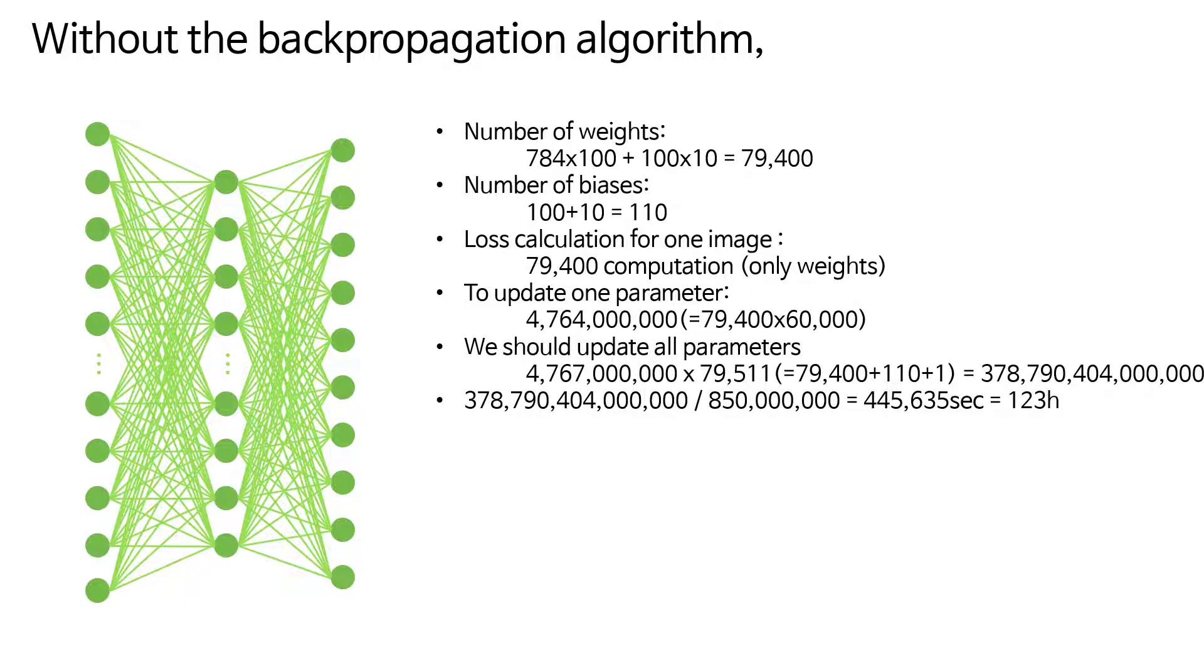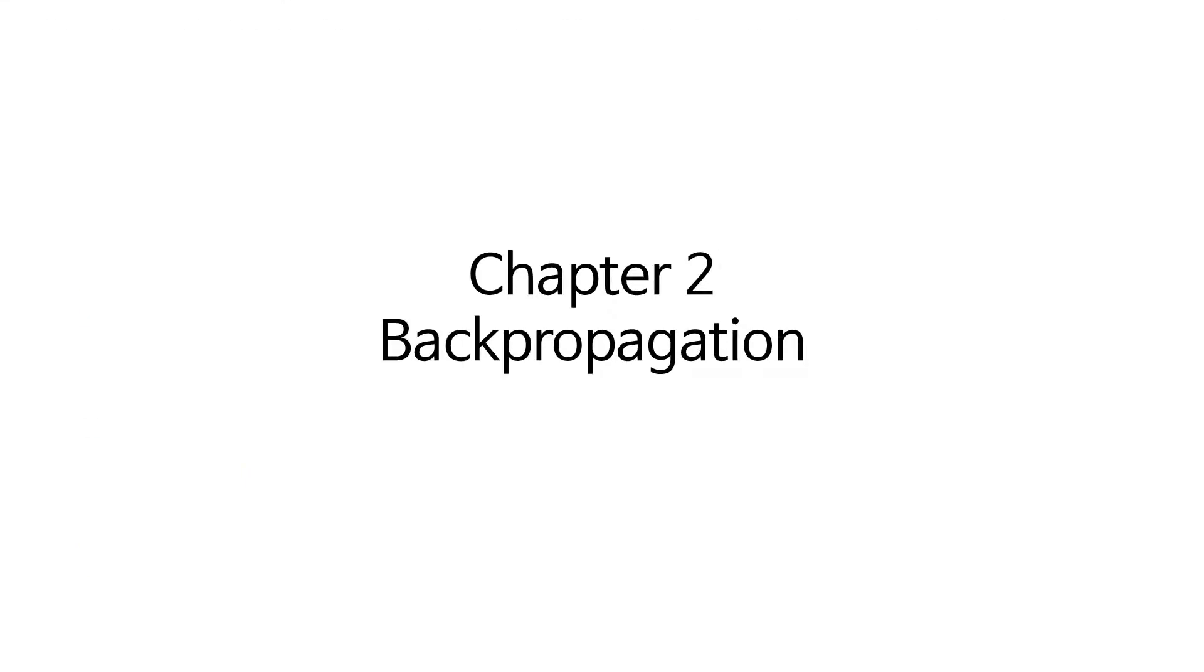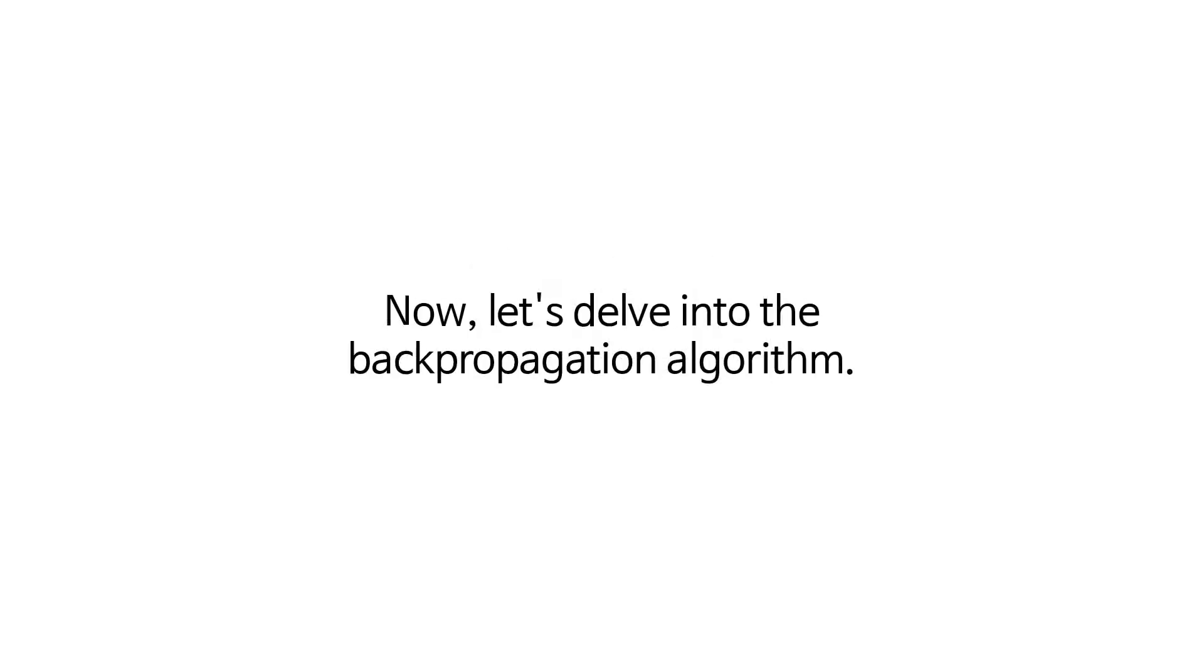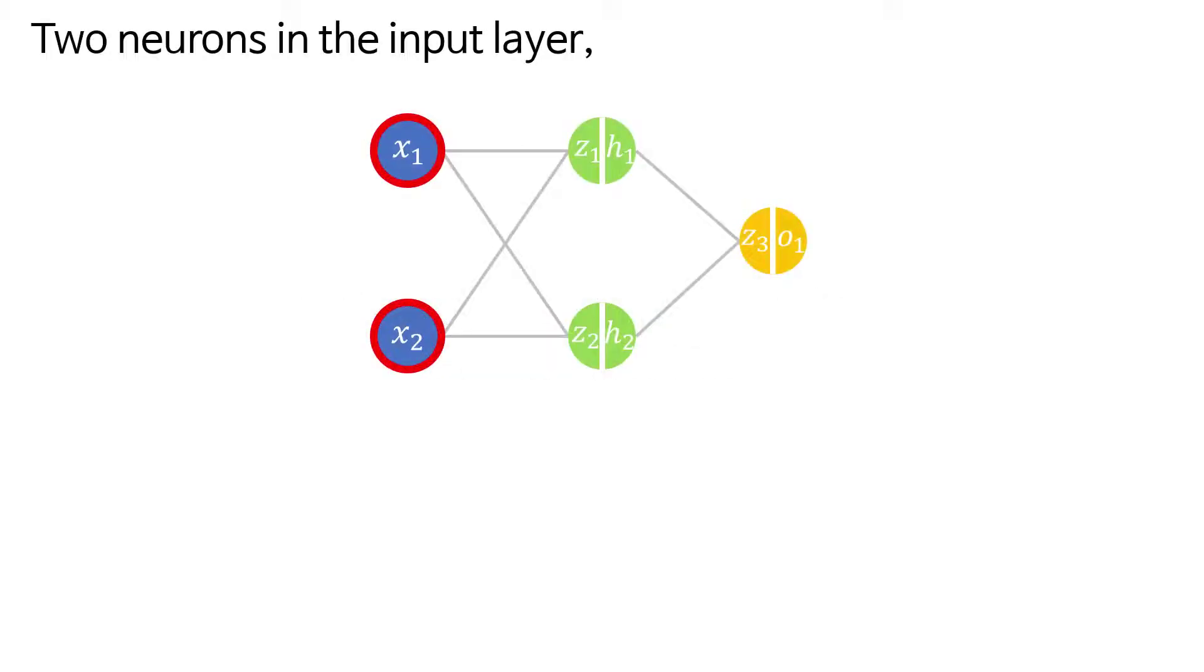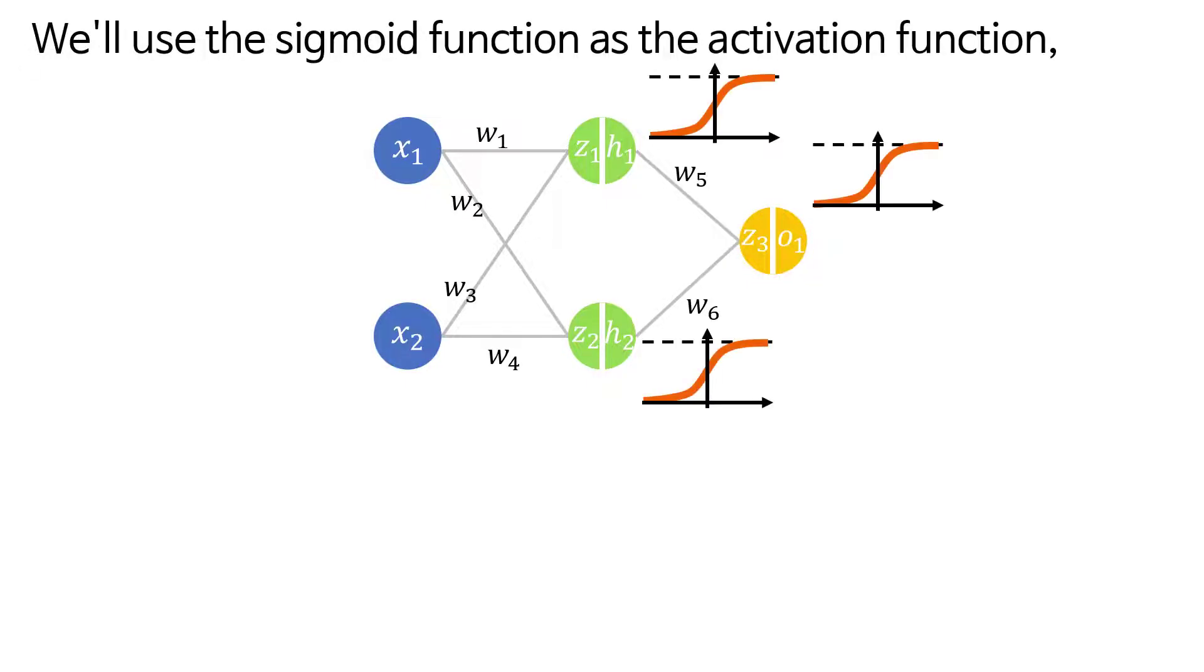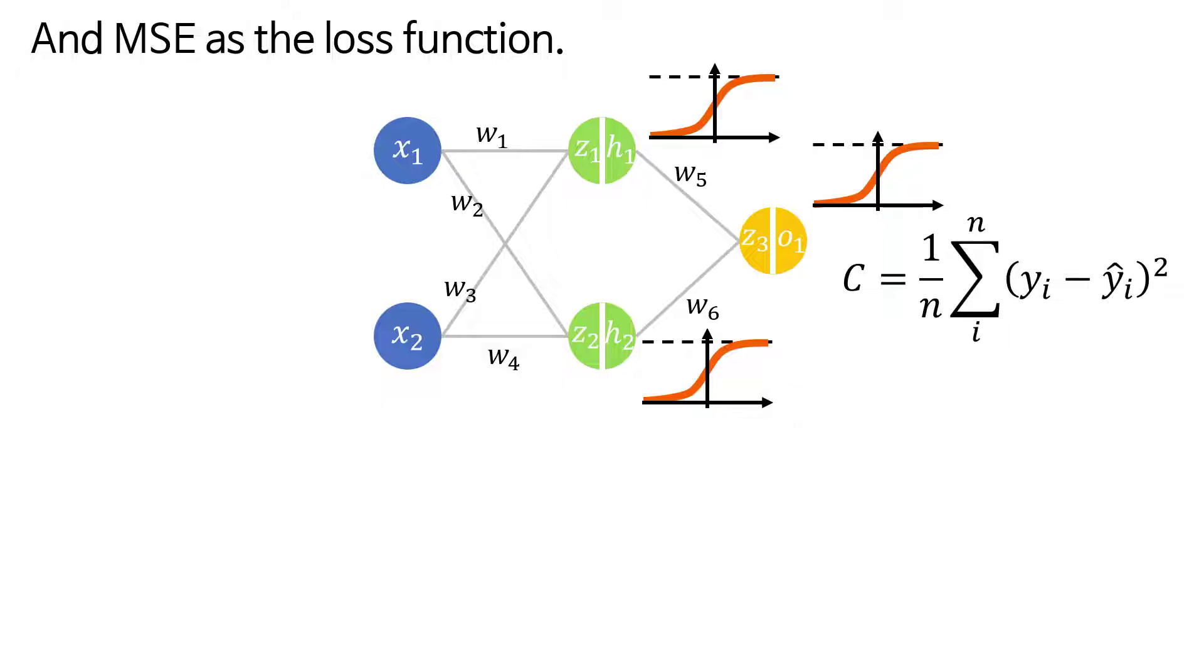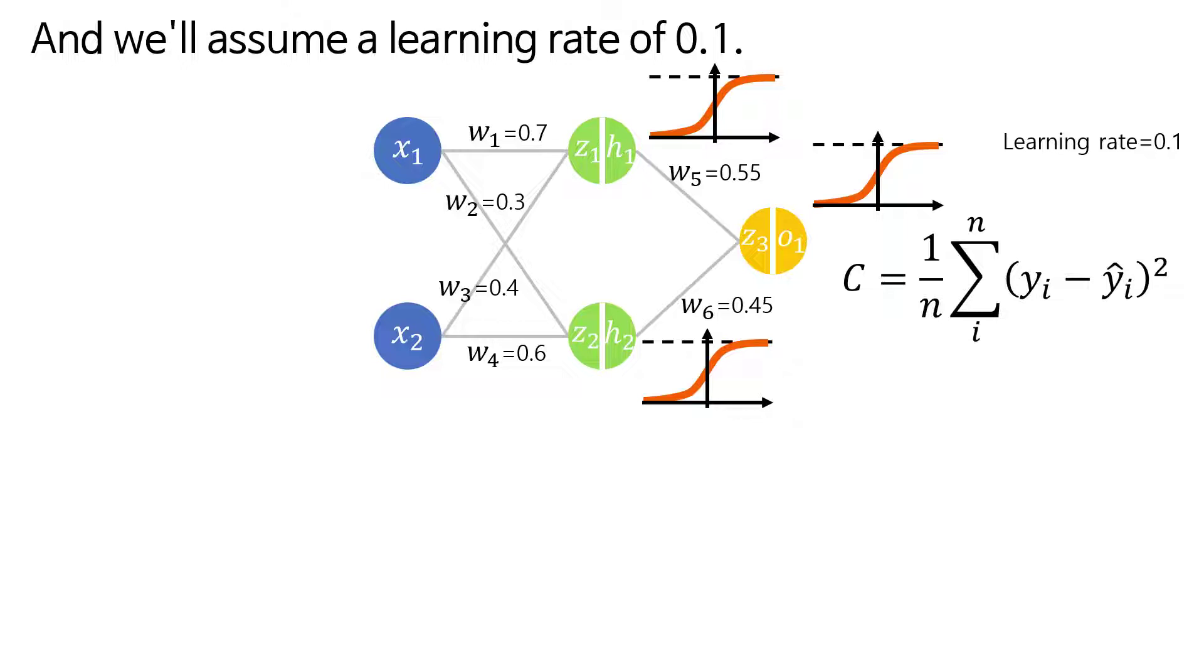Without the backpropagation algorithm, the era of deep learning and AI would not have arrived. Chapter 2: Backpropagation. Now let's delve into the backpropagation algorithm. Let's assume a simple multilayer neural network: two neurons in the input layer, two neurons in the hidden layer, and one neuron in the output layer. And there are six weights.